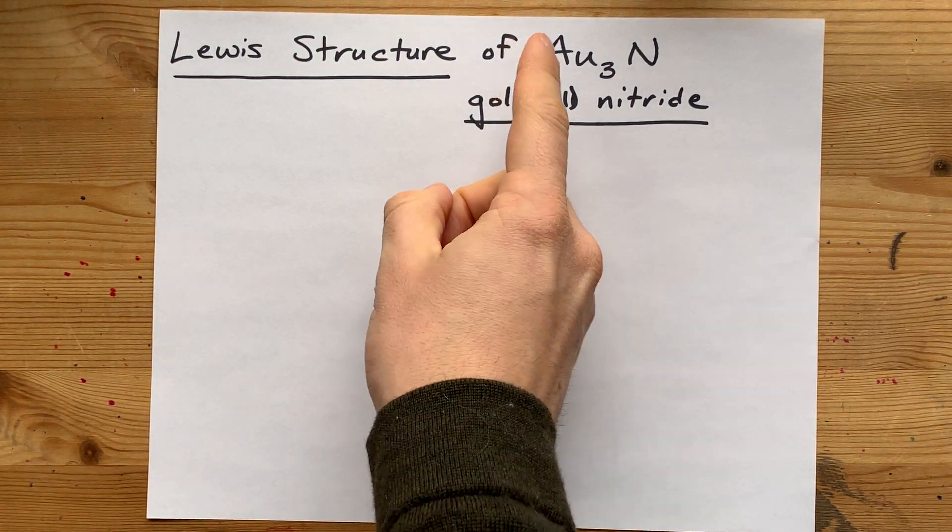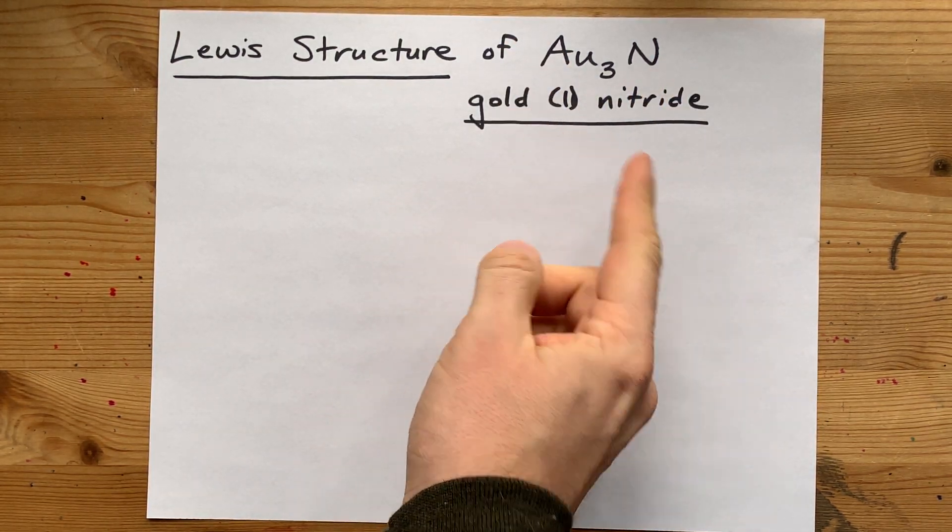We're going to draw the Lewis structure for AU3N, gold-1-nitride.